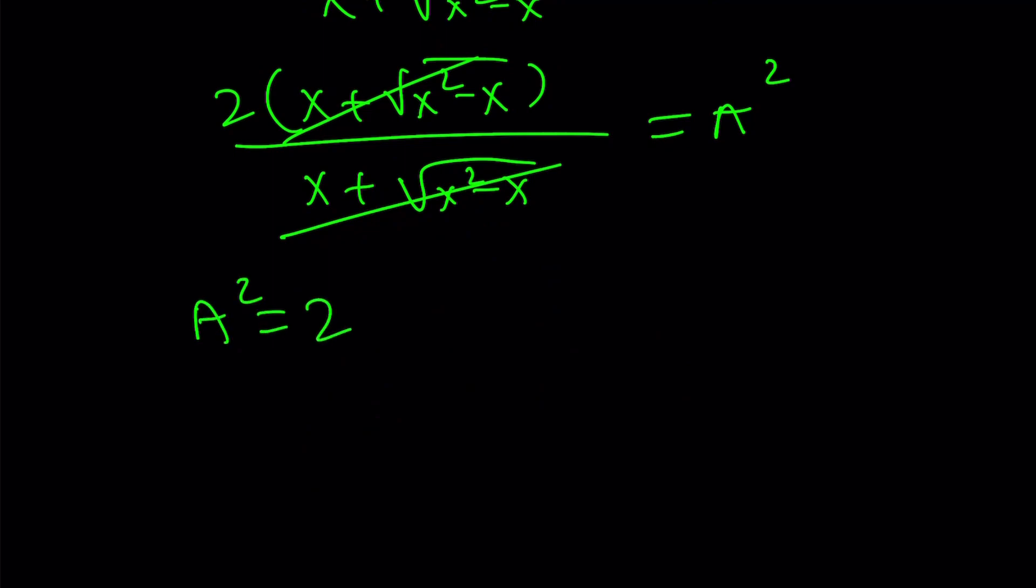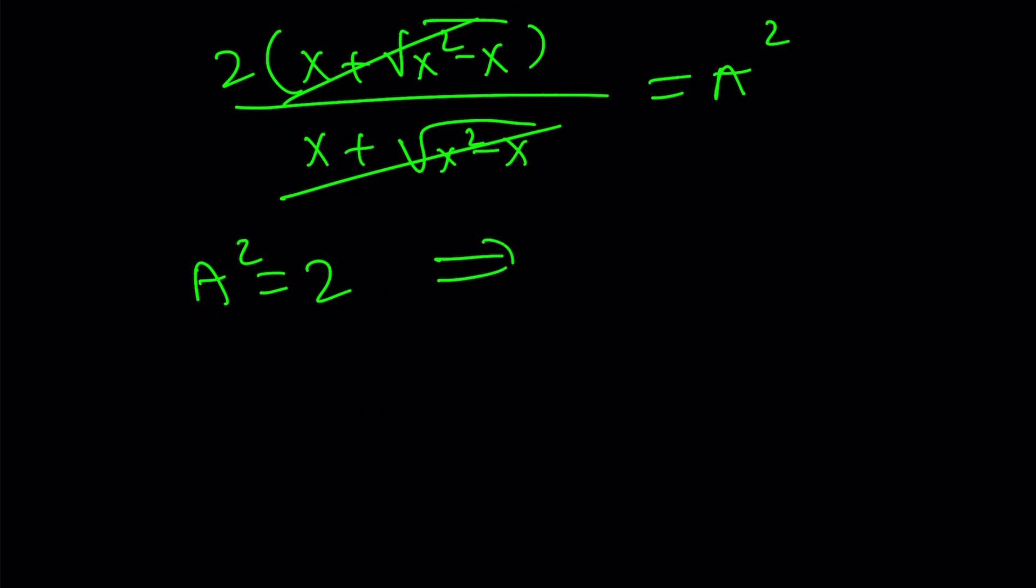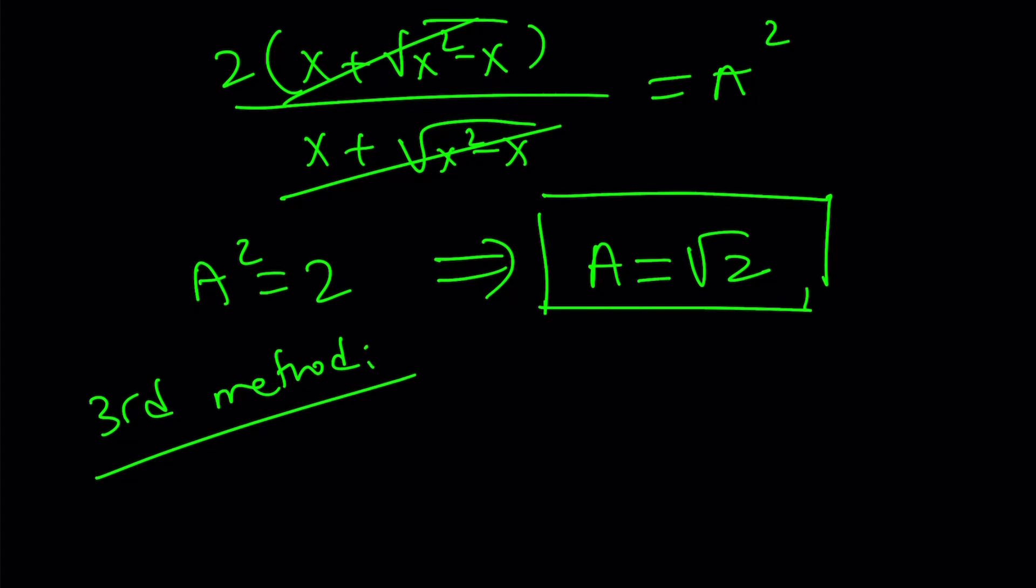You're going to notice that a is a positive quantity because everything is positive. Therefore, from here, a is what we're trying to evaluate, is equal to square root of 2. Great. So, let's go ahead and talk about the third method real quick. Our third method is quick and fun.